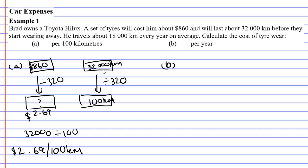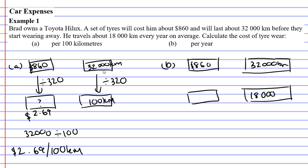We'll move now on to question B, which basically works the same. We're going to use the same values at the top, $860, 32,000 kilometres, and this time it wants you to find the cost per year. You'll notice in the question it says that he travels about 18,000 kilometres every year. So if we're doing it per year, we're going to assume that he's travelled 18,000 kilometres.